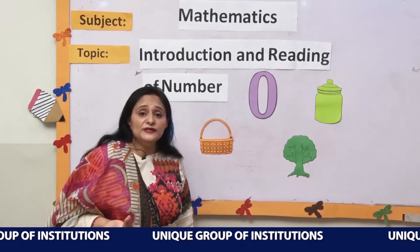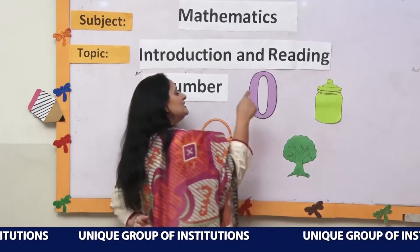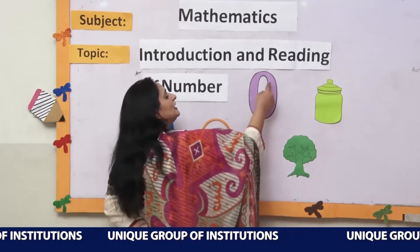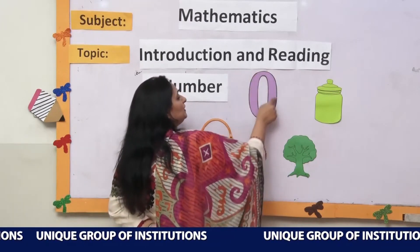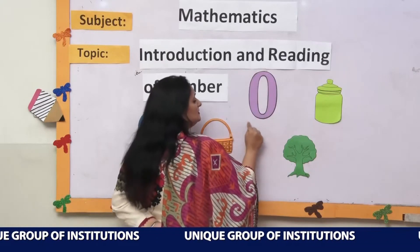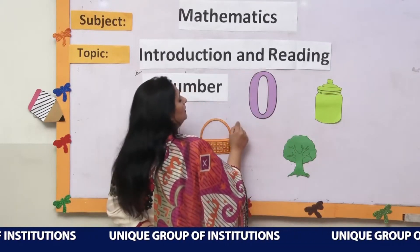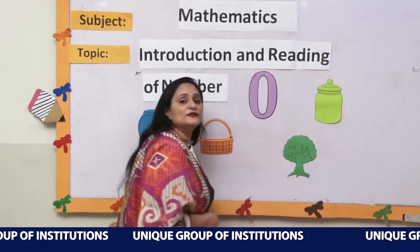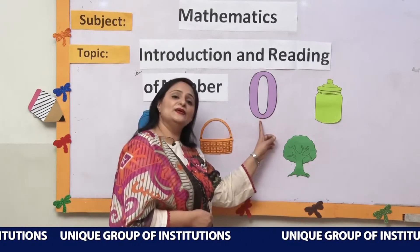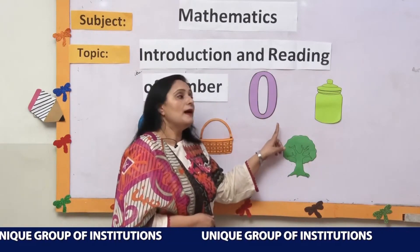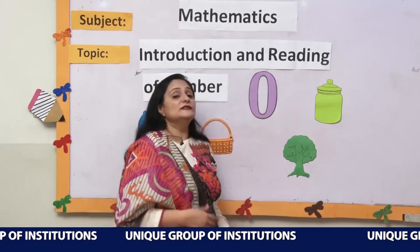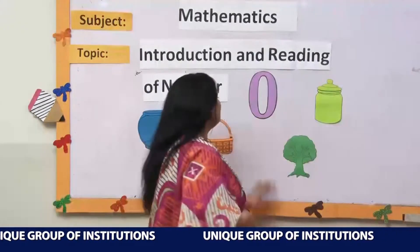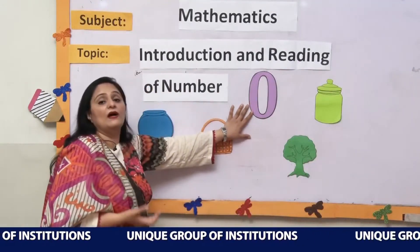Where is number 0? Let's find out. This is number 0. Say the name of number 0 with me three times: 0, 0, 0. My dad is my hero. 0 means nothing. When there are no things, that means there are 0 things.